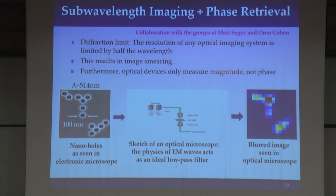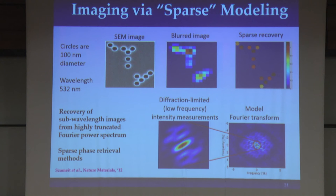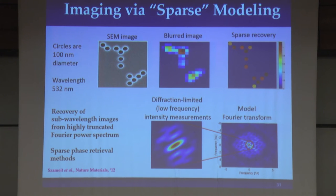Another application where nonlinearities play an important role is optical imaging. In optics, we have two limitations to overcome: the diffraction limit, meaning we can only see details as large as half the wavelength of the illuminating light, and the fact that we only measure the magnitude, not the phase. In essence, what we view in optics is only the magnitude of the low-pass regime of our signal. We have to exploit structure in the presence of nonlinear distortions — the third part of the workshop is devoted to these types of problems.